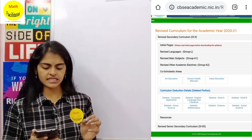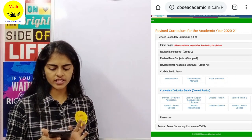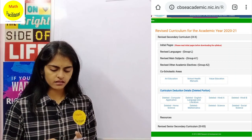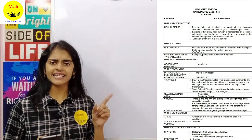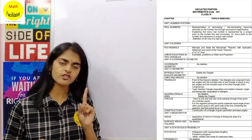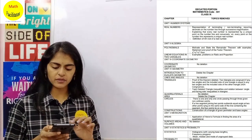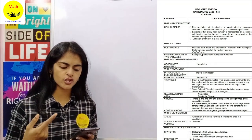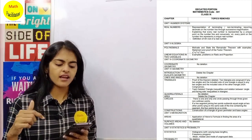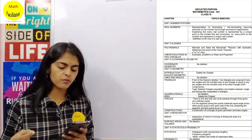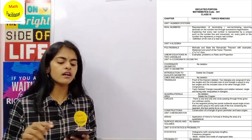Since we are a math channel, we will discuss the deleted math syllabus here. Once you click on that, a PDF will be opened. As the first option we went through is classes 9 and 10, in the PDF you will have the deleted portion of math for classes 9 and 10. In class 9, Unit 1 — Real Numbers — three topics are deleted: representation of terminating or non-terminating recurring decimals on a number line using successive magnification, explaining that every real number is represented by a unique point on a number line and the converse, and the definition of the nth root of a real number.